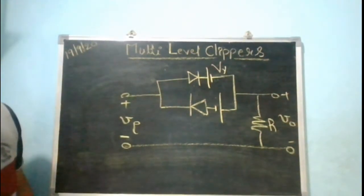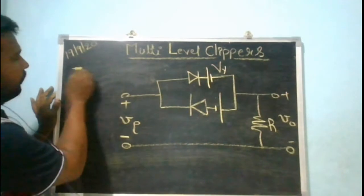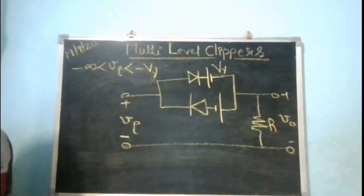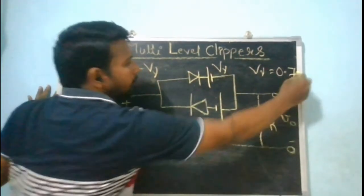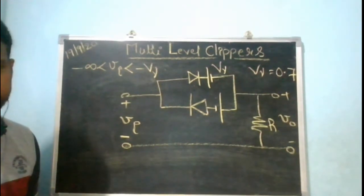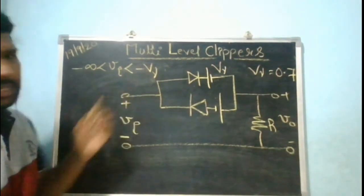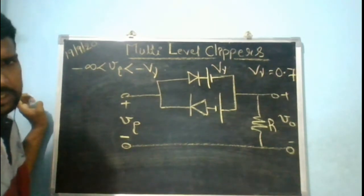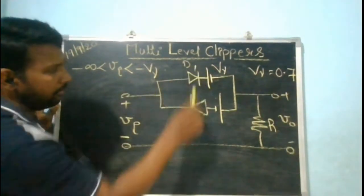After replacing the diodes with the constant voltage drop model, the equivalent circuit is set up. Let V gamma equal 0.7 volts. Consider the first interval from minus infinity to VI less than minus V gamma — that is, input less than minus 0.7, meaning values like minus 0.8, minus 0.9. For this region, with D1 and D2 present, what is the state of the diodes? Since the input is negative and the N side of the diode is tied to positive, D1 is off.